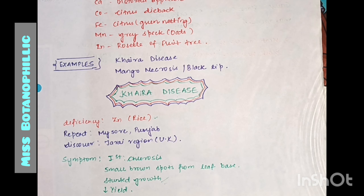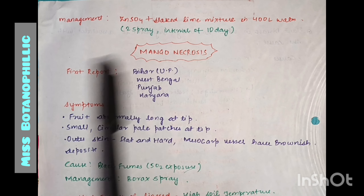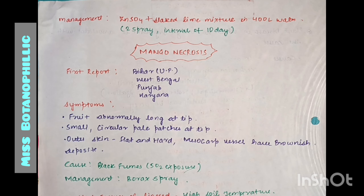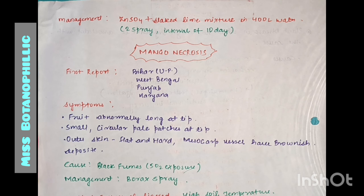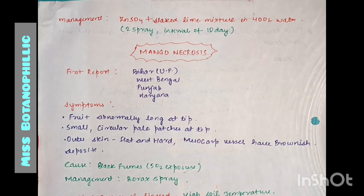The yield is lower, meaning productivity sinks. These are the symptoms of Khera disease. It is a non-parasitic disease seen in rice due to zinc deficiency. For management, you can use zinc sulphate plus slaked lime mixed in 400 litres of water. Give 2 sprays at an interval of 10 days.